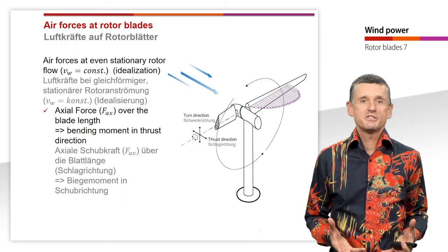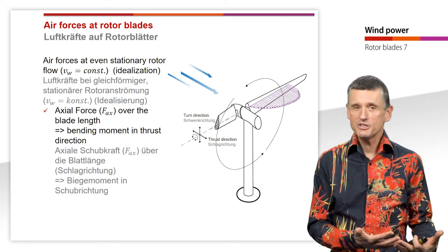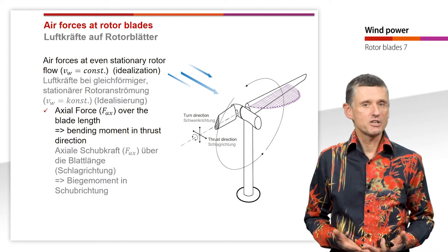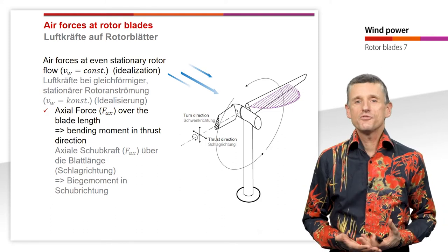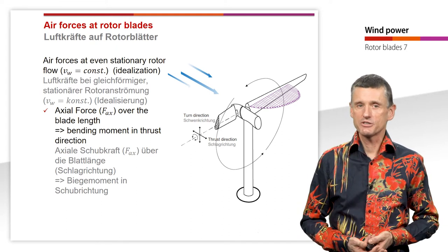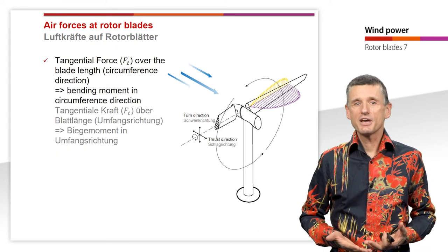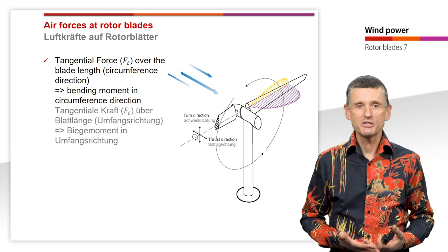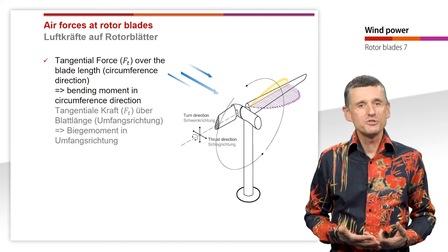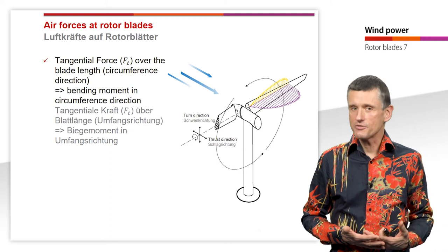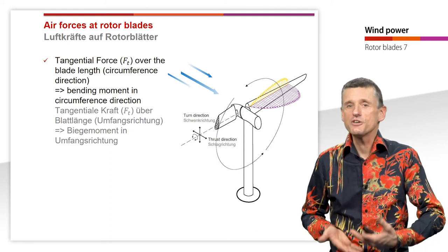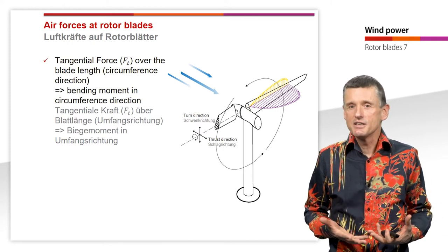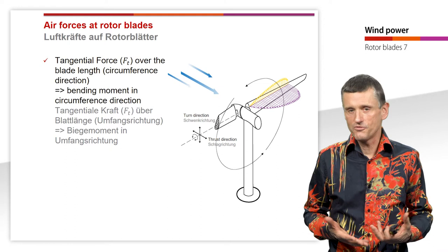Finally, we have the air forces themselves, which were already discussed in former videos. First, we have the axial force FAX over the complete blade length, producing bending moments in the thrust direction. We also have the tangential force over the complete blade length in the circumference direction, again producing bending moments — and this is the force that actually generates the power of the wind turbine, though it is also a source of fatigue.